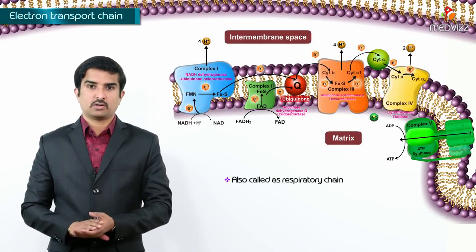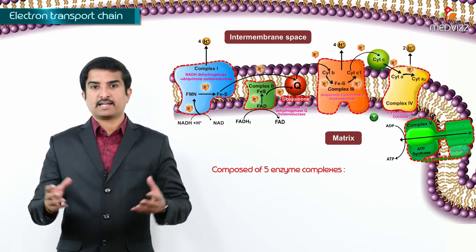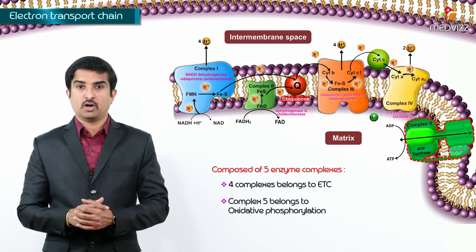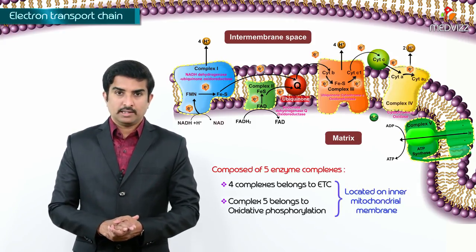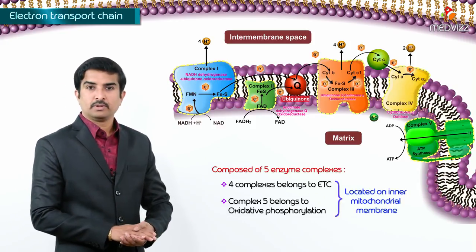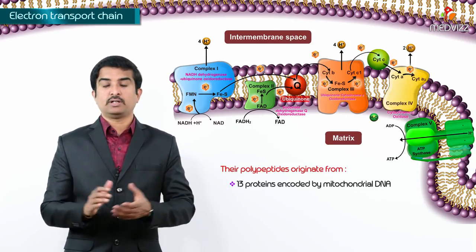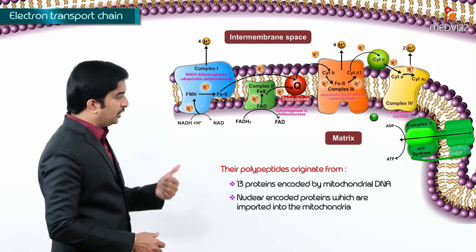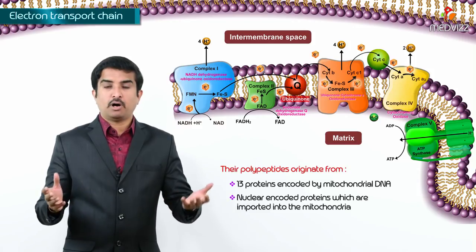The electron transport chain, also called the respiratory chain, is composed of five enzyme complexes. Four complexes belong to the electron transport chain and complex five belongs to oxidative phosphorylation. All these complexes are located on the inner mitochondrial membrane, and their polypeptides originate from the 13 proteins encoded by mitochondrial DNA and from nuclear-encoded proteins imported into the mitochondria.